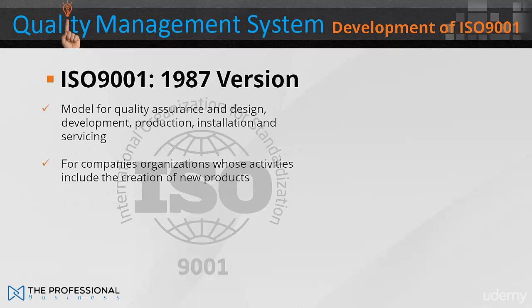The ISO 9001 1987, model for quality assurance in design, development, production, installation and servicing, was for companies and organisations whose activities included the creation of new products.